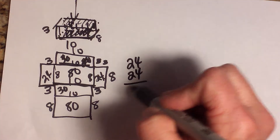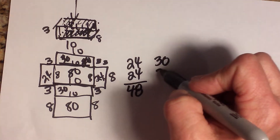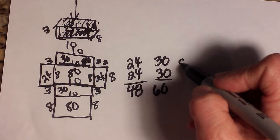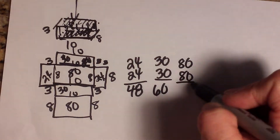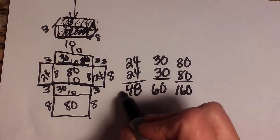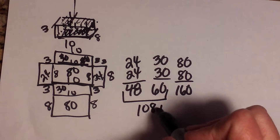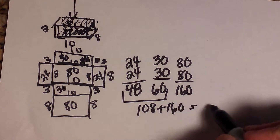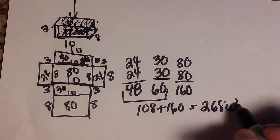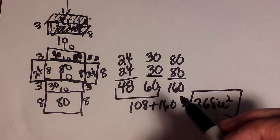Let's add those up: 24 and 24 is 48; 30 and 30 is 60; 80 and 80 is 160. Adding all together: 48 plus 60 is 108, plus 160 is 268 square units. That is how you find the surface area of a rectangular prism.